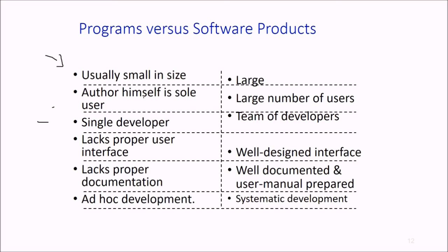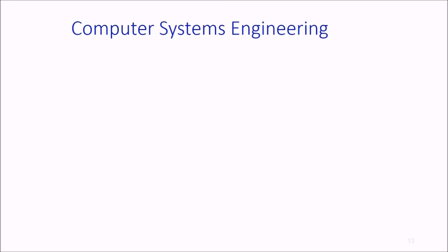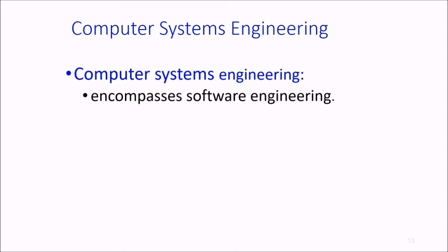Single developer for a program, while teams of developers are involved in making a software product. Programs lack proper user interface, while products have well-designed interfaces. Programs lack documentation, while software products should be well-documented and contain user manuals. Ad hoc development for programs, while there's a policy of systematic development for software products.